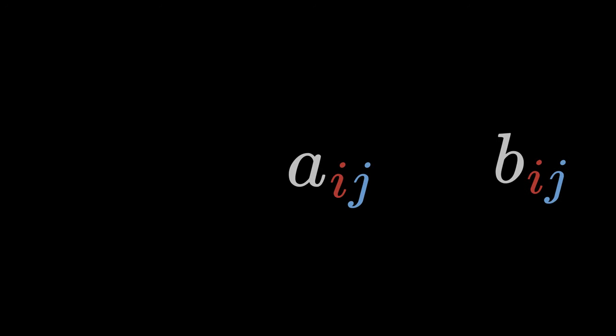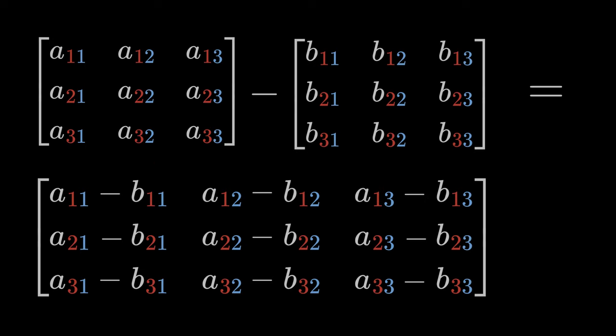We can subtract two tensors A and B of the same order. Aij minus Bij equals Cij. The result is a new tensor Cij of the same order. Subtraction works in the same way as addition.